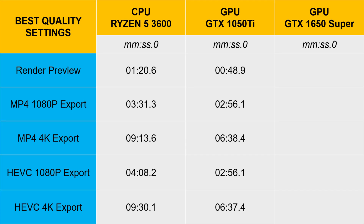Back to some testing — let's have a look at the render preview with the GTX 1650 Super. Down to 42 seconds. That's not a massive difference but the system does feel one heck of a lot smoother.